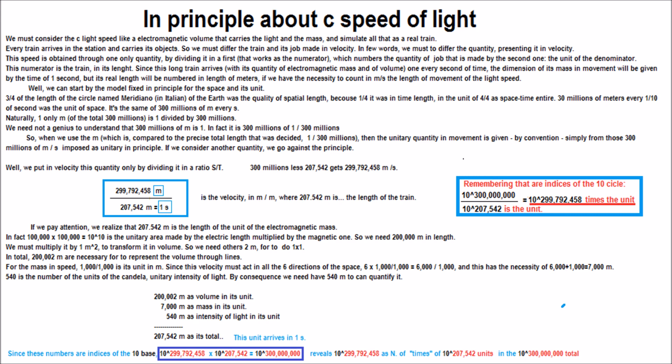This unit arrives in one second. Since these numbers are indices of the 10 base, we have that the multiplication between the powers are the sum of the indices, and reveals the times that the unit exists in the total having the index of 3 multiplied by 10 raised to 8.